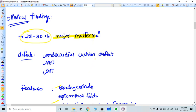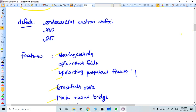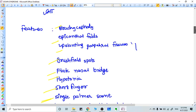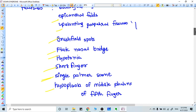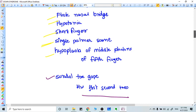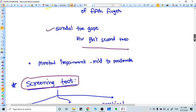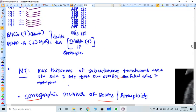What are the defects? Endocardial cushion defects, VSD, anterior abdominal wall abnormalities. Features include: brachycephaly, epicanthal folds, upslanting palpebral fissures, Brushfield spots, flat nasal bridge, hypotonia, short fingers, single palmar crease, hypoplasia of the middle phalanx of the fifth finger, gap between first and second toe, and mental impairment of mild to moderate category, not severe.